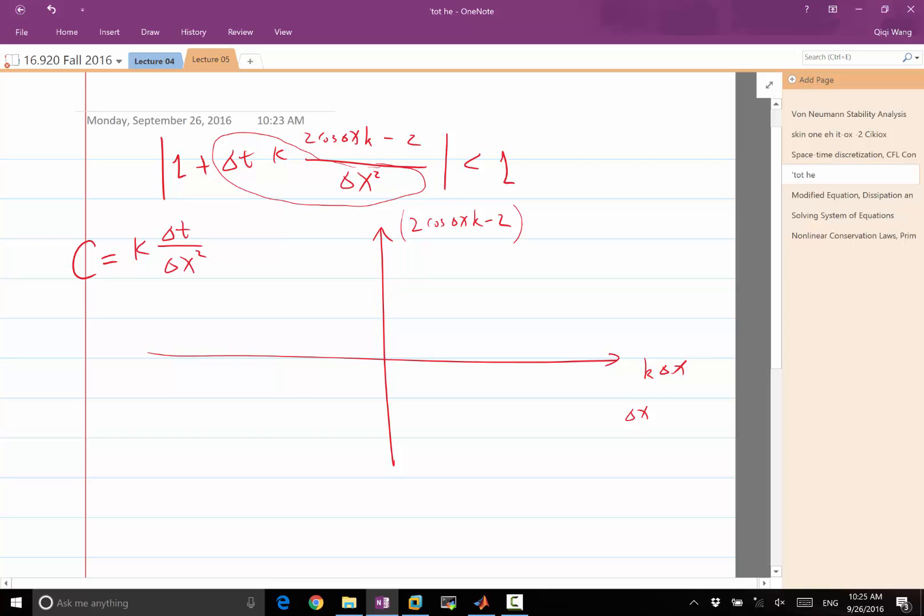Remember k delta x, because delta x equals 2 pi over n and k goes from minus n over 2 to n over 2 minus 1, so the range of k delta x is bounded between minus pi and pi.